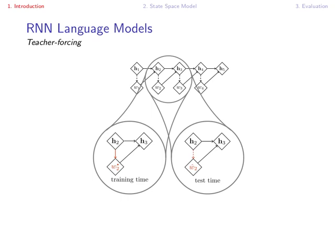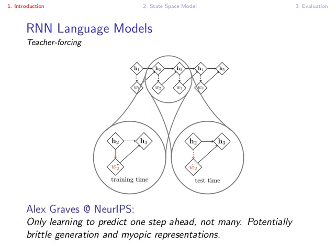Just to get this confirmed by somebody who has worked in the field for years, at the NeurIPS representation learning workshop, Alex Graves mentioned teacher forcing as one of the big three problems for autoregressive models. And in his own words teacher forcing might lead to predict one step ahead, not many, and potentially brittle generation and myopic representations.